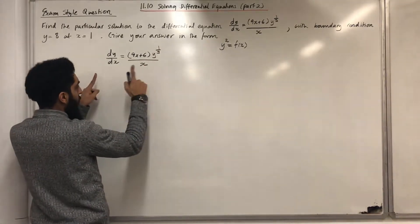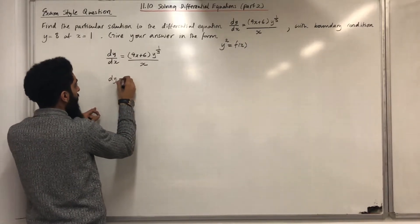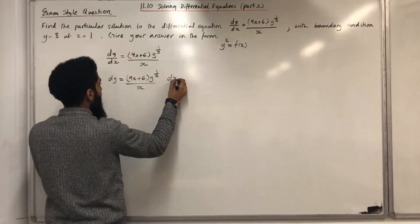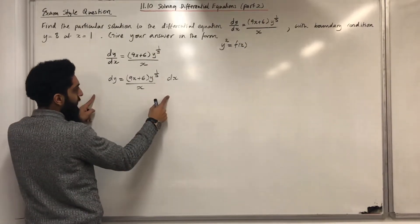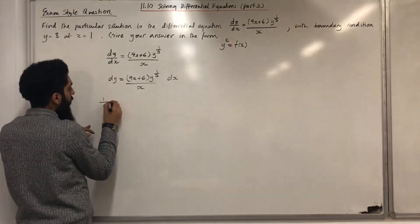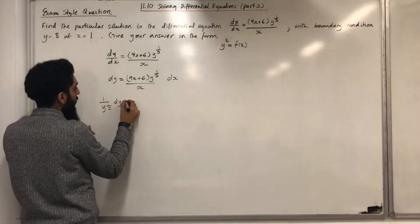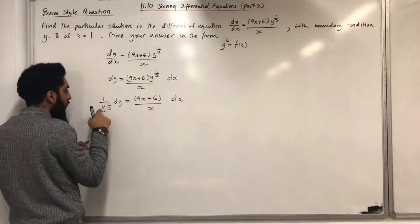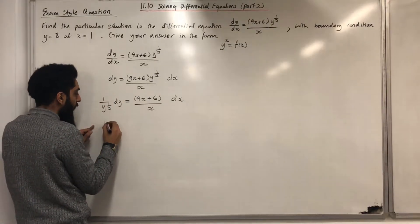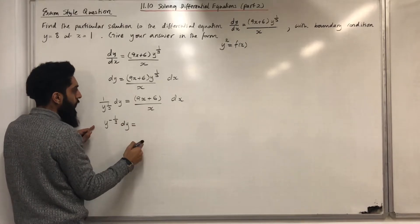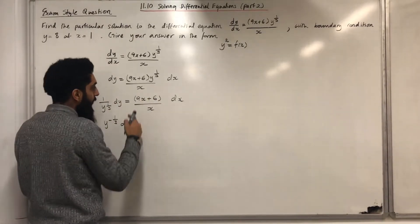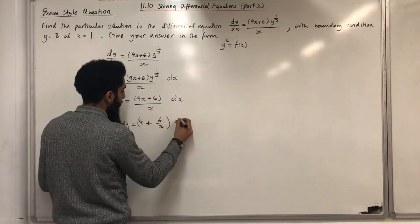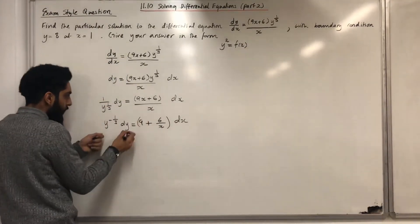The first step is to multiply both sides by dx to give dy = (9x + 6) · y³ / x dx. The next step is to divide both sides by y³, giving 1/y³ dy = (9x + 6)/x dx. Now 1/y³ can be rewritten as y^{−3}, and the fraction (9x + 6)/x can be split into two parts: 9x/x + 6/x, which is 9 + 6/x dx.